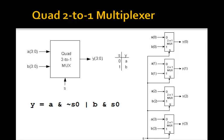Now you remember that a quad 2 to 1 mux, we can make from four regular 2 to 1 muxes, as shown here. And you remember the logic equation for each of these 2 to 1 muxes is just y = a and not s0 or b and s0.